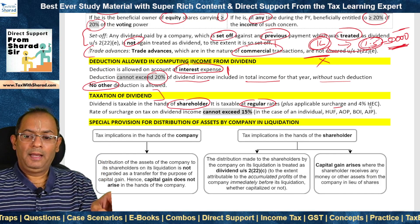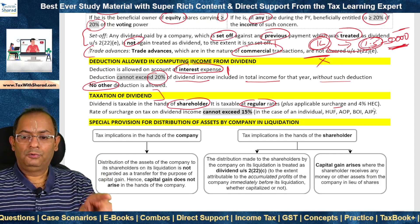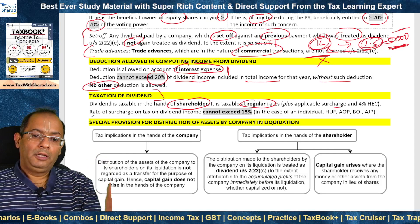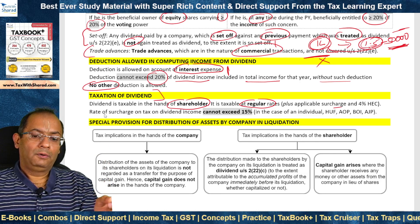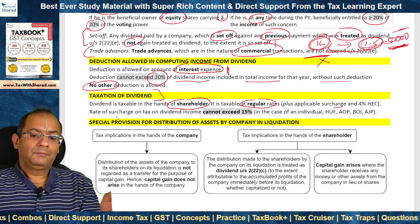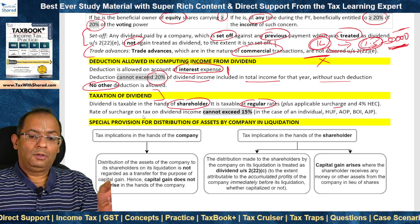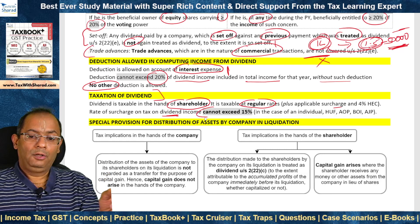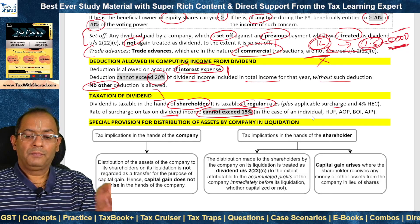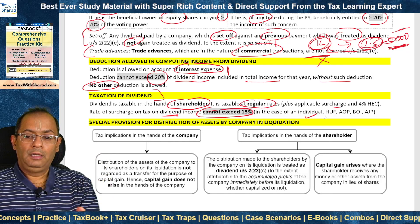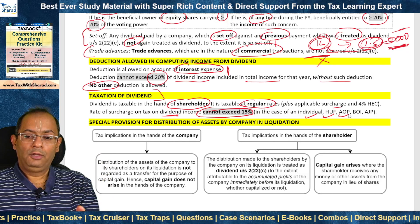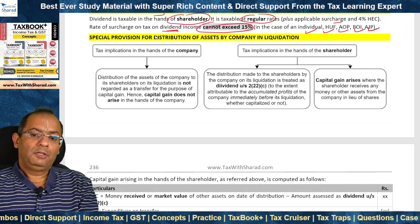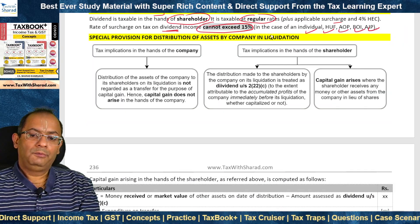Plus applicable surcharge and 4% Health and Education Cess. We have already noted in the topic on rate of tax that the rate of surcharge on tax on dividend income cannot exceed 15% in the case of an individual, HUF, AOP, BOI or AJP.